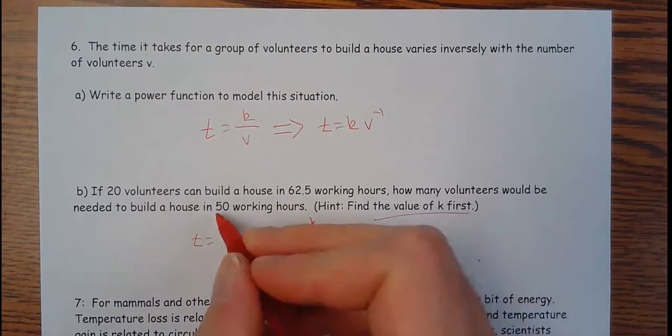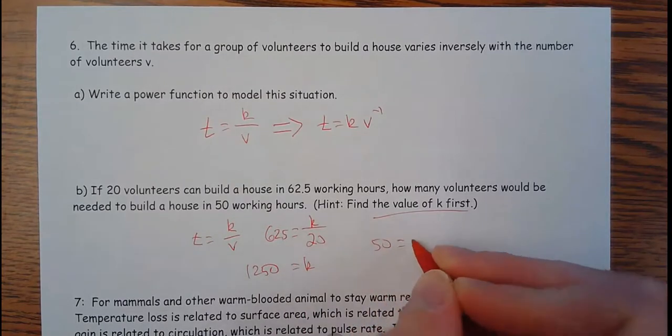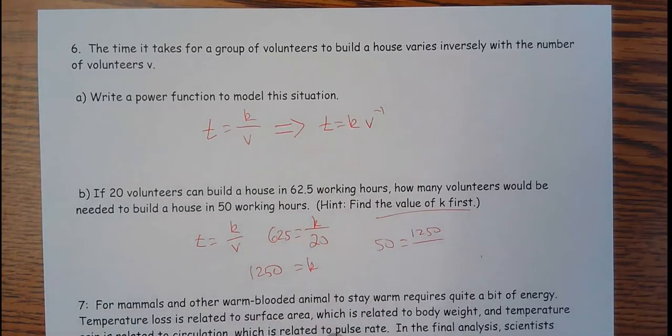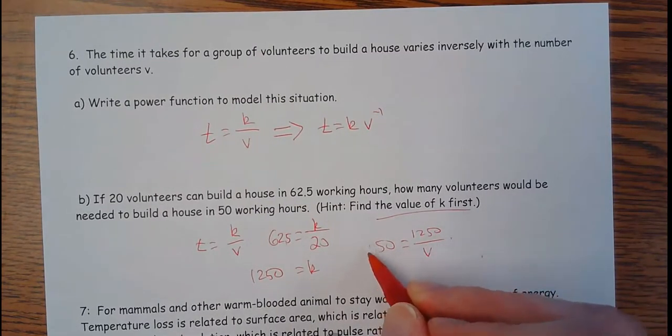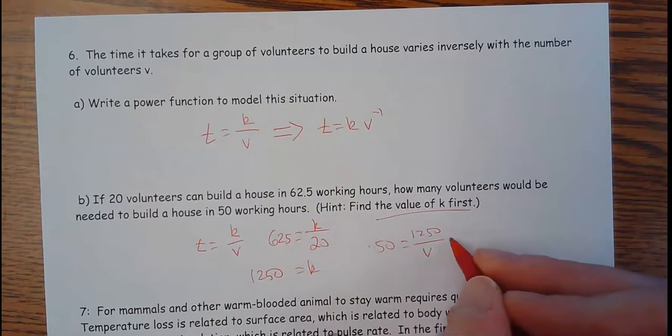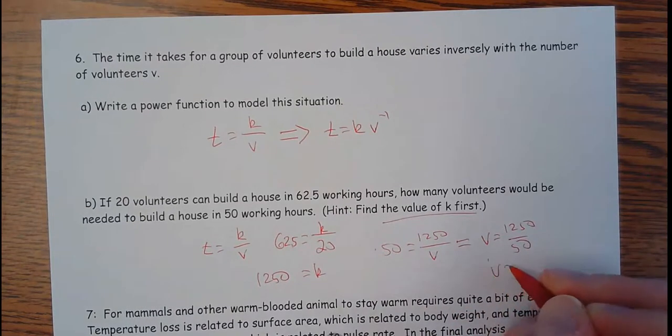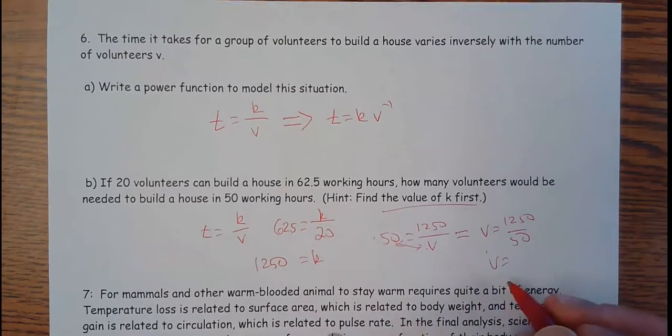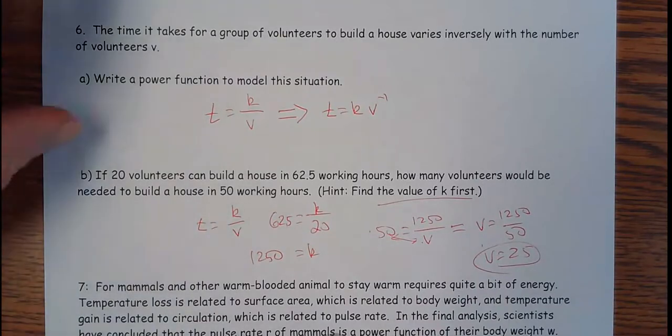But now, how many volunteers would be needed for 50 working hours? I'm going to put 50 hours in for time, 1250 in for that constant, and I'm going to divide that by how many volunteers to get it done in 50 hours. So we're solving for V. This would be V times 50 equals 1250, and then divide by 50. V equals 1250 over 50. That means it would take 25 volunteers. So if you get 25 volunteers, you can get this thing done in 50 hours.